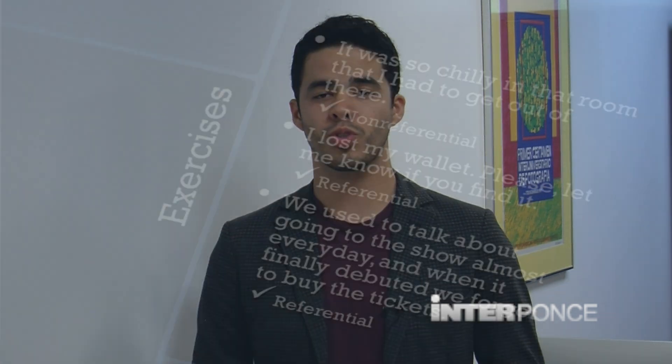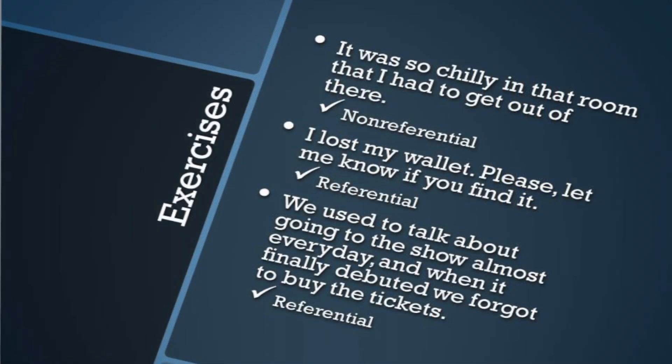Let's look at the first exercise: 'It was so chilly in the room that I had to get out of there.' Let's think about the it — is it referential or non-referential? Here we can see that the it is not referring to anything specific. It's just talking about the weather or the environment in the room.